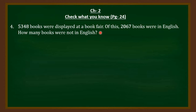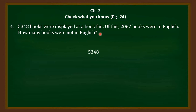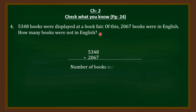So here also, we will subtract 2,067 which is the number of books in English from 5,348 which is the total number of books, and we will get the books which are not in English. So now you can solve it by writing the statements in your notebook.